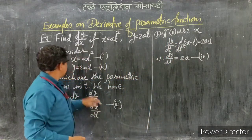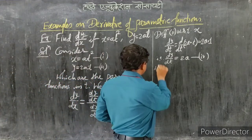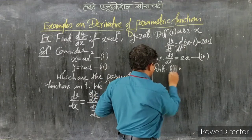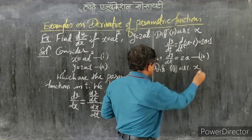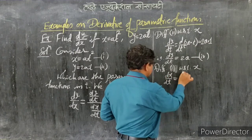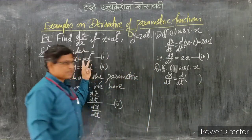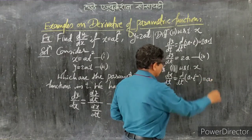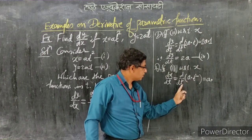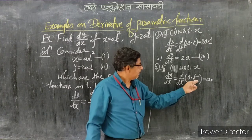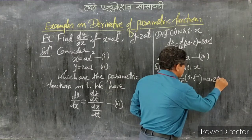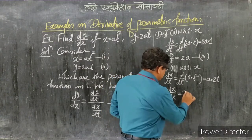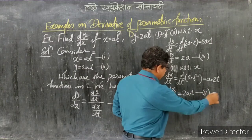Now differentiating equation 1 with respect to t: x = at², so dx/dt = d/dt(a·t²). Since a is a constant, it can be taken outside: dx/dt = a · d/dt(t²). The derivative of t² with respect to t is 2t — similar to how d/dx(x²) = 2x. Therefore dx/dt = 2at. Call this equation 5.